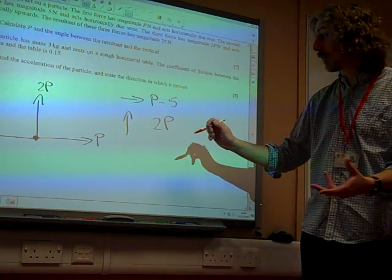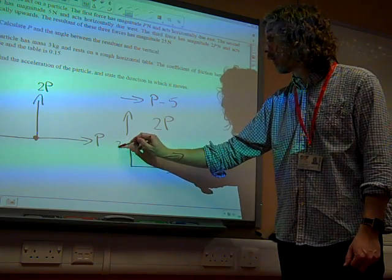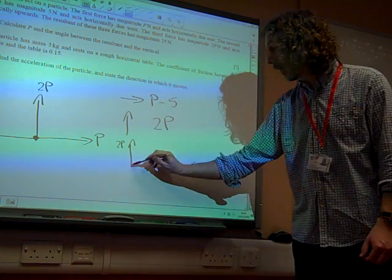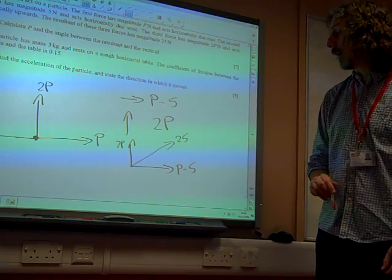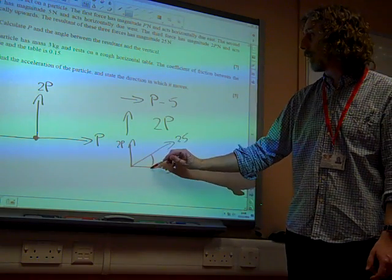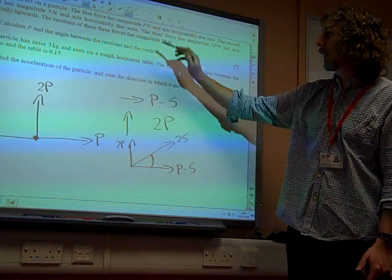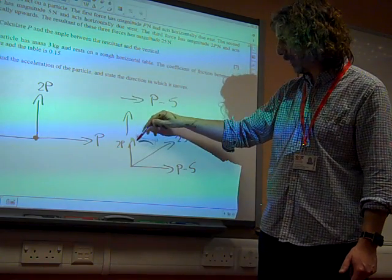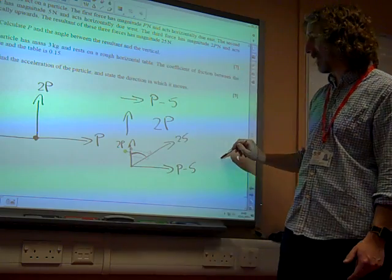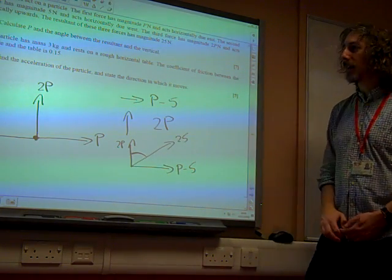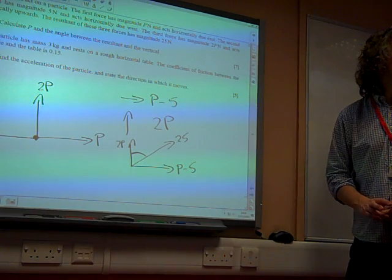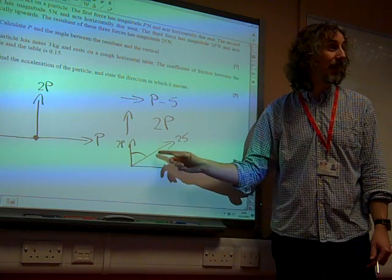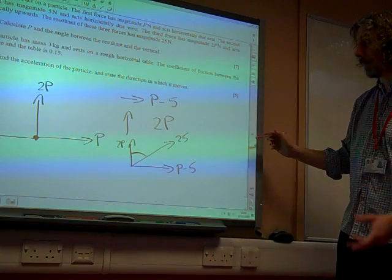We've already done this kind of working out. What we're now saying is that here we have 2P vertically upwards, P minus 5 in that direction, and we have a resultant force of 25 newtons at an angle. That's not the angle that we want, is it? Hang on. Beautifully done! That's the angle that we want, because the question said calculate the angle between the resultant and the vertical. Notice my instinct is to find that angle, but that's not the angle they asked for this time. Be careful about that.